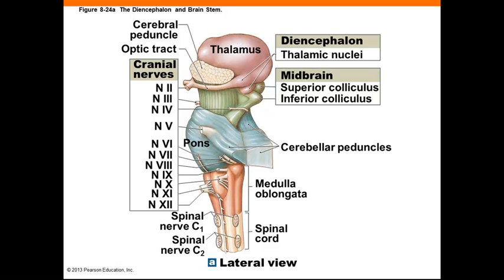Just inferior to the pons, the medulla oblongata connects the brain with the spinal cord and contains sensory and motor nuclei for cranial nerves 8, 9, 10, 11, and 12. It also contains reflex centers, like the cardiovascular centers to adjust heart rate and arteriolar diameter, and respiratory rhythmicity centers to regulate the respiratory rate.